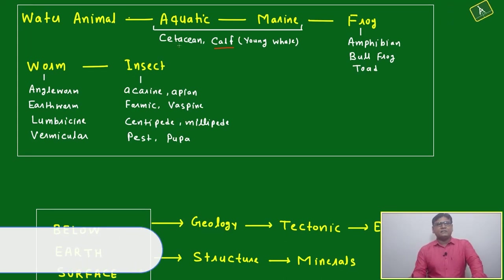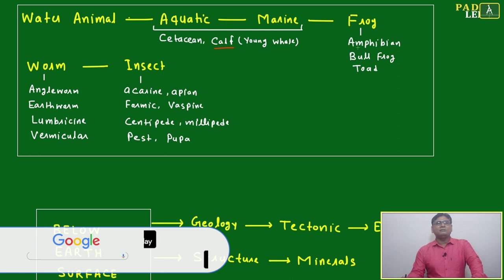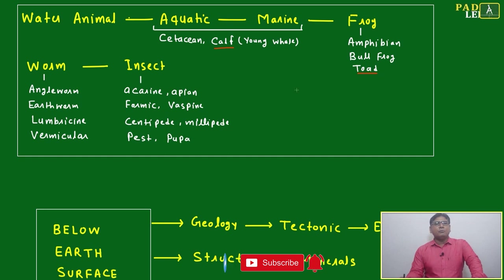This is again young whale, it is called calf or cetacean - that is another word. Frog, frog is in between, that is water animal also land animal also - amphibian. Bullfrog, toad, all these different names of frog.